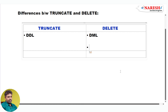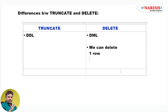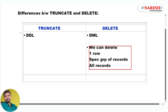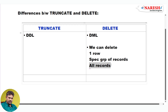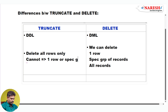Using the DELETE command, can we delete a single record? Yes, we can delete a single record. Can we delete a specific group of records — like managers' records or department 30 employees' records? Yes, we can delete a specific group of records. Can we delete all records? Yes. So with DELETE, we can delete a single row, a specific group of rows, or all rows — three possibilities. But using TRUNCATE, there is only one possibility: we can delete all rows only. We cannot delete one row or a specific group of rows.